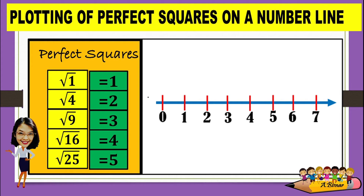The square root of 1 is 1, so we have here the square root of 1. The square root of 4 is 2, so we have here the square root of 4. And so on — we have the square root of 9, which is 3; the square root of 16, which is 4; the square root of 25, which is 5; then the square root of 36; and then the square root of 49. This is how we are going to plot perfect squares.